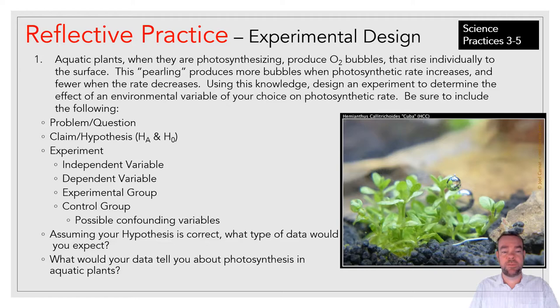So, tell me what your problem or your question is. Your claim and hypotheses. So, alternative and null. And then, design your experiment. So, your independent variable, dependent variable, experimental and control groups. And tell me possible confounding variables you would have to consider. And then, assuming that your hypothesis is correct, what would your data look like? And what would it tell you about photosynthesis in aquatic plants?